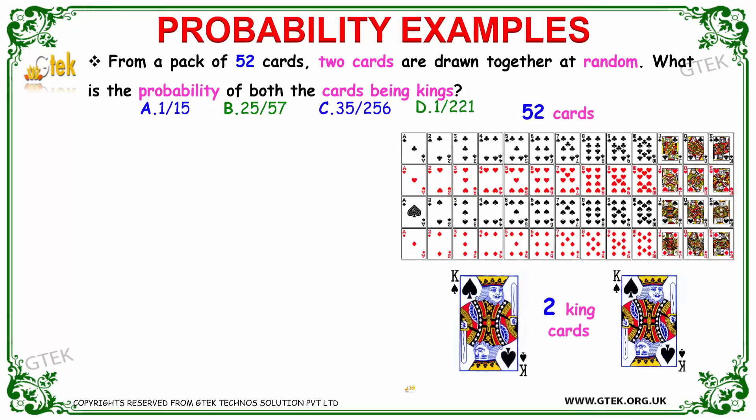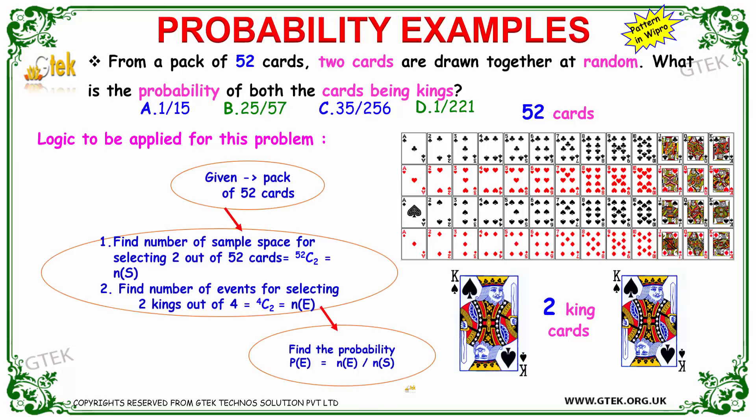We'll move to the pack of cards. We got 52 cards in a pack. Two cards are taken at random. What is the probability of both the cards being the king? That's the question. So this is the 52 cards in a pack and the possibility of being the king.